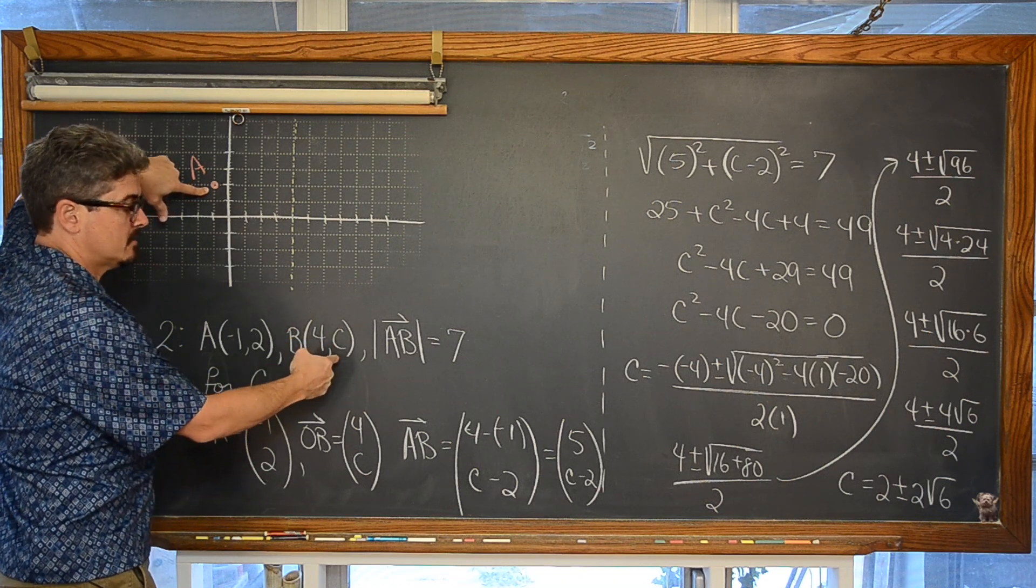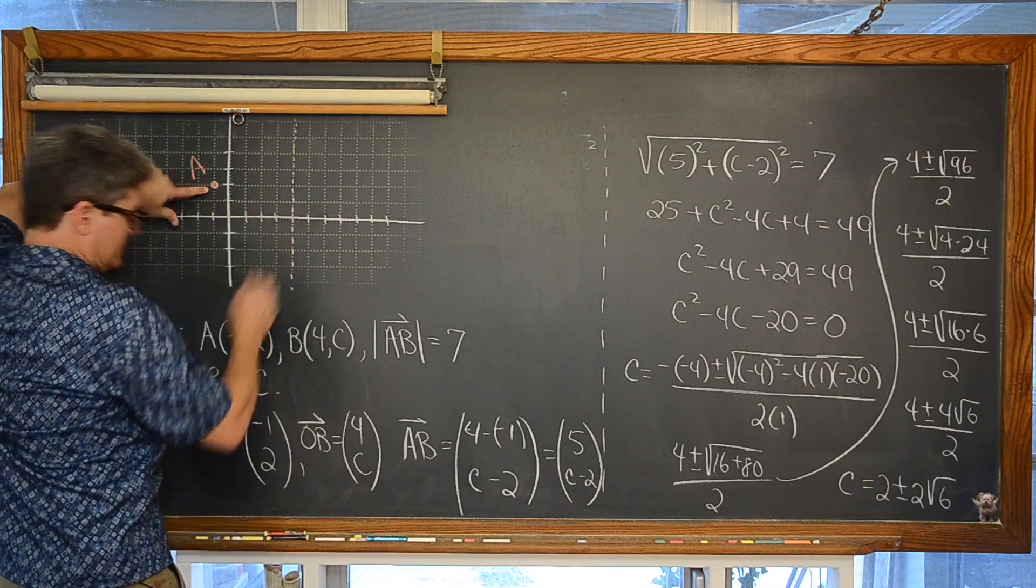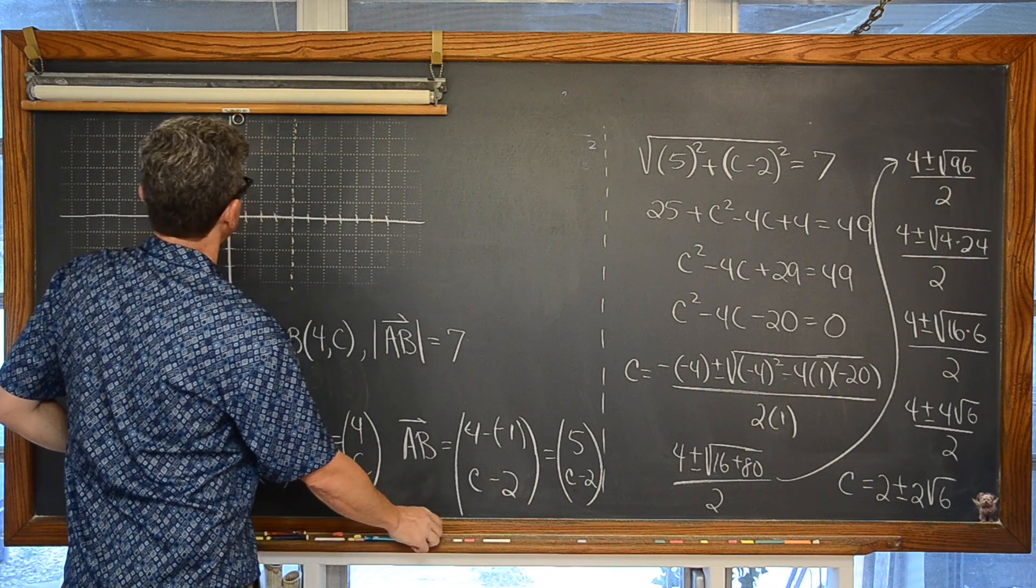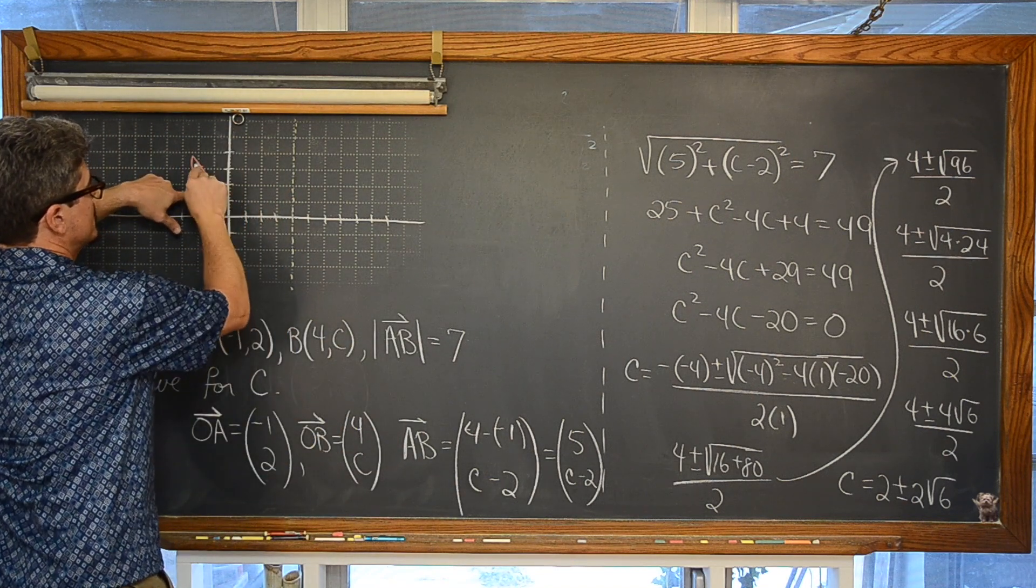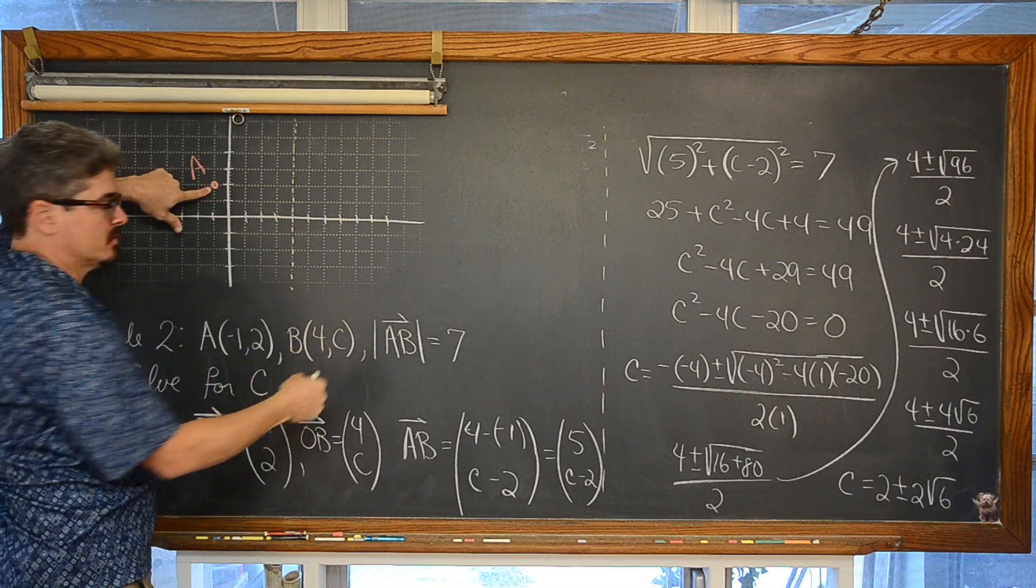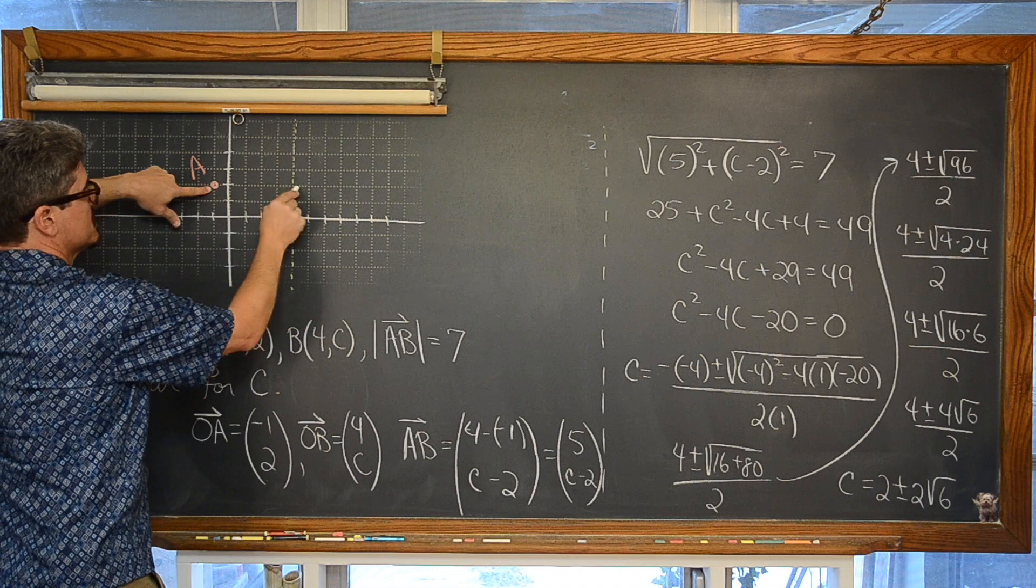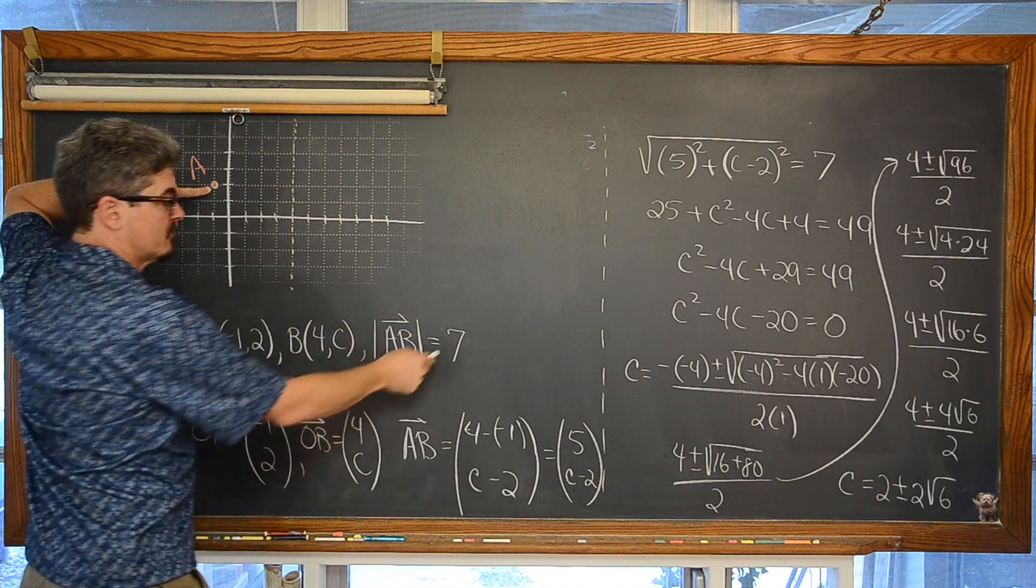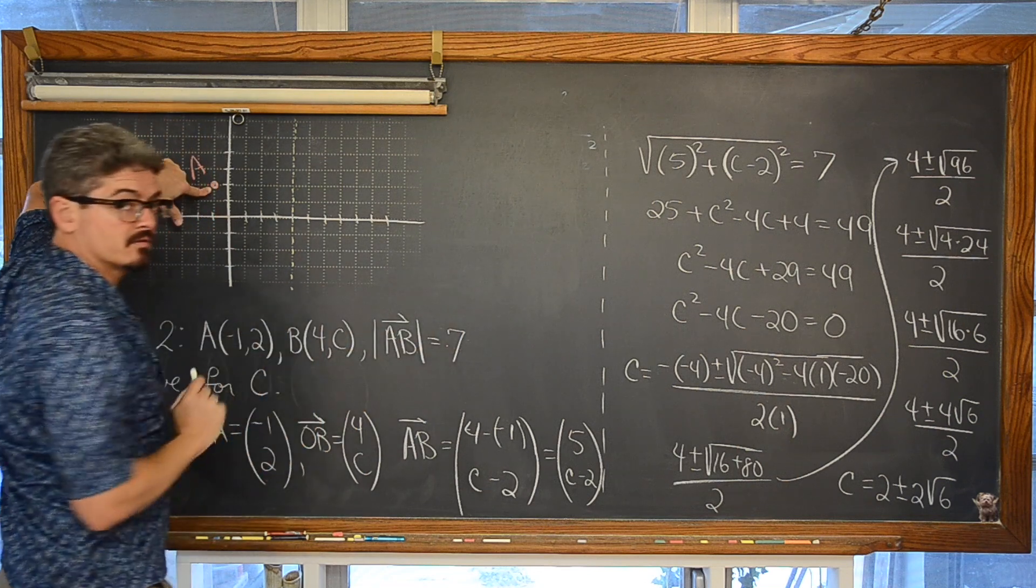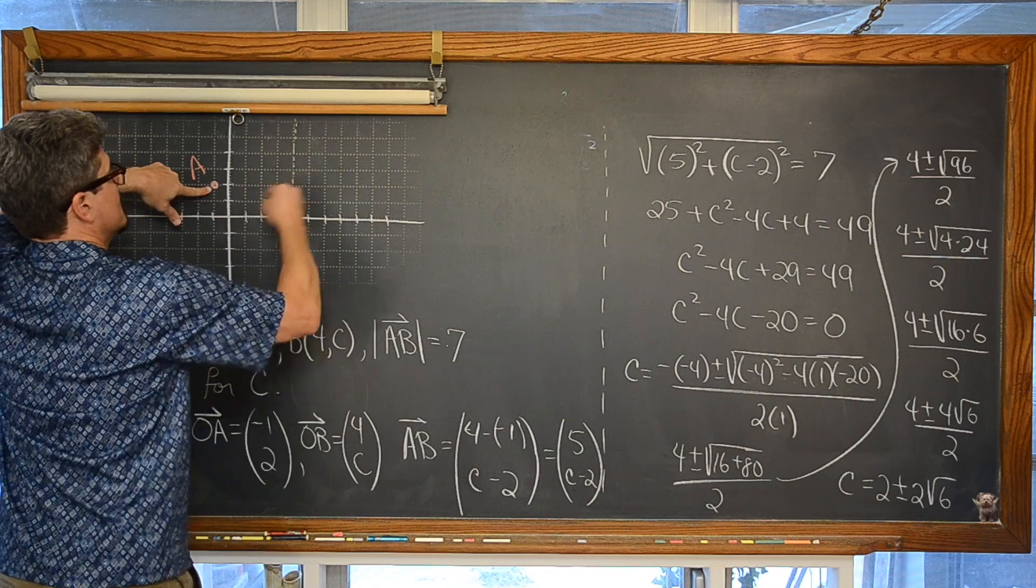You have this point of A which is at negative 1, 2 and the value of B which is some x coordinate of 4 and an unknown y value. Well, yeah, I mean there is only going to be one answer if the distance between point A, like magnitude of this vector, if the magnitude of vector AB is exactly this horizontal distance of 1, 2, 3, 4, 5 units, well then there is only going to be one answer. But if this is obviously greater than 5, there is just going to be some kind of point B here somewhere.